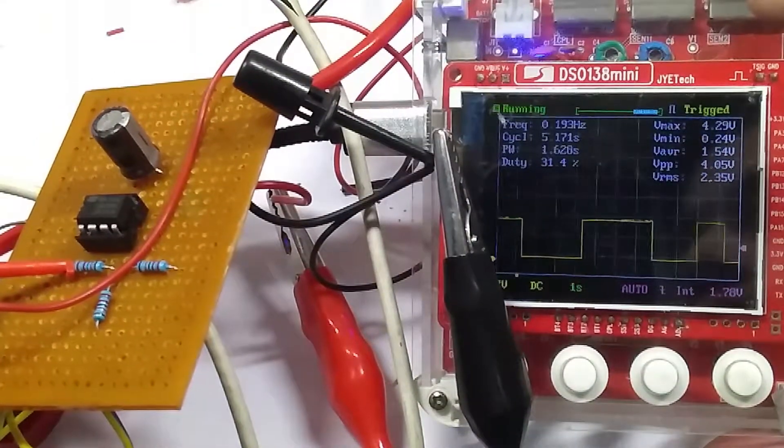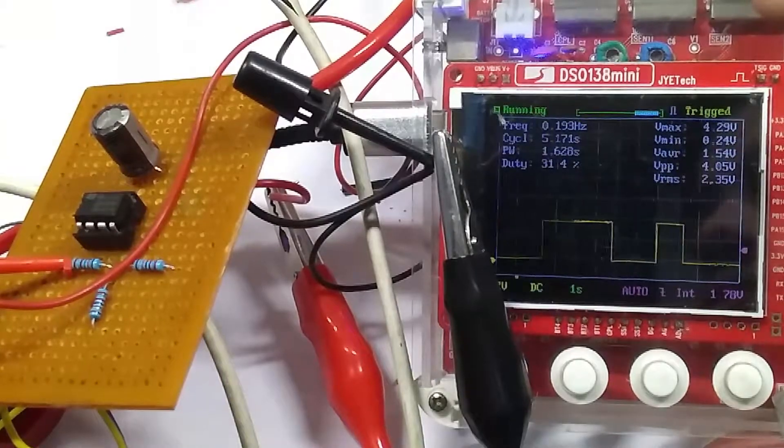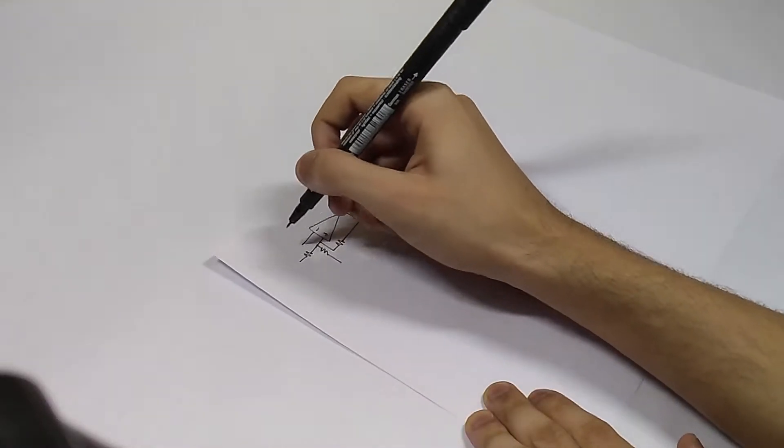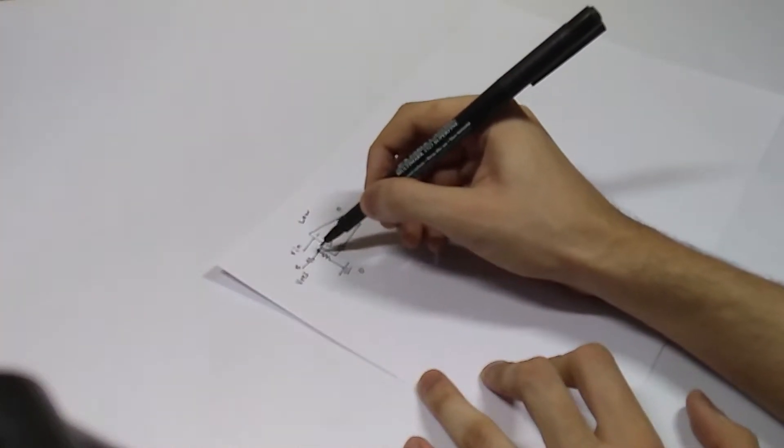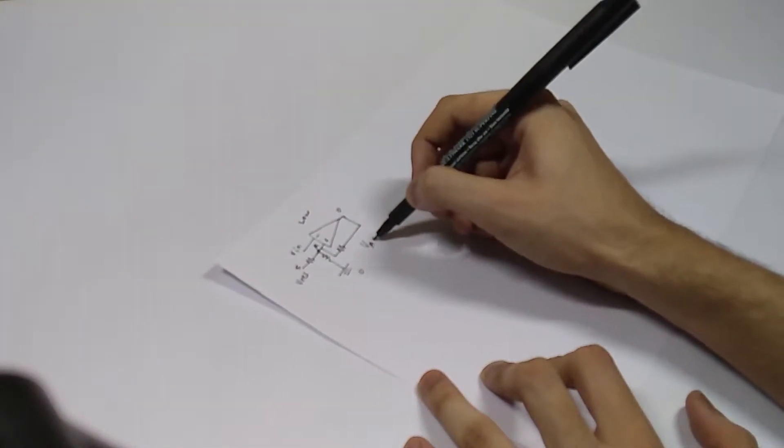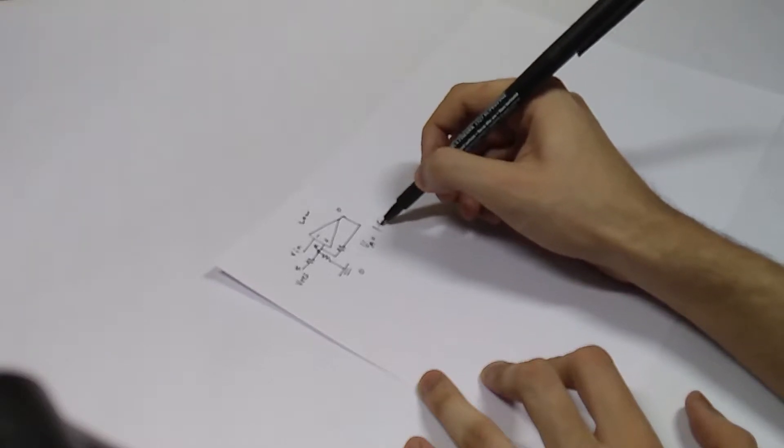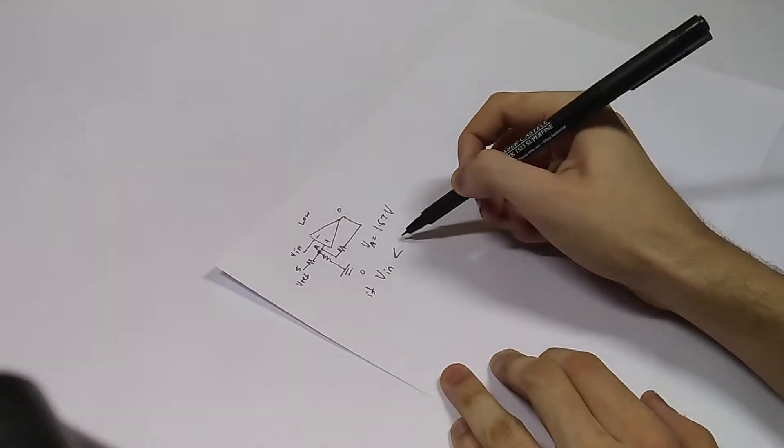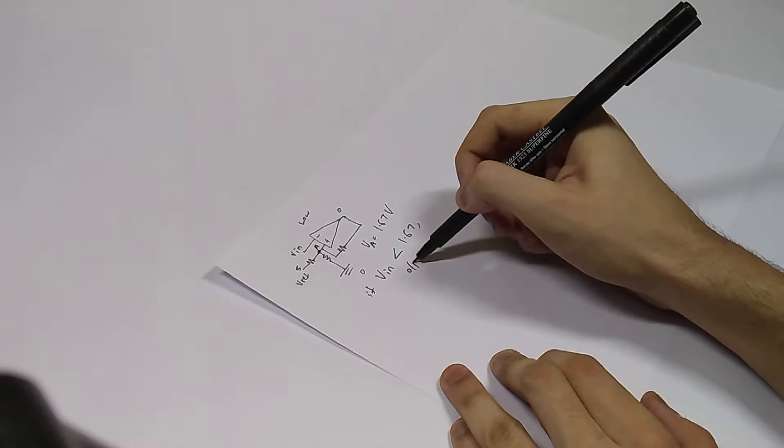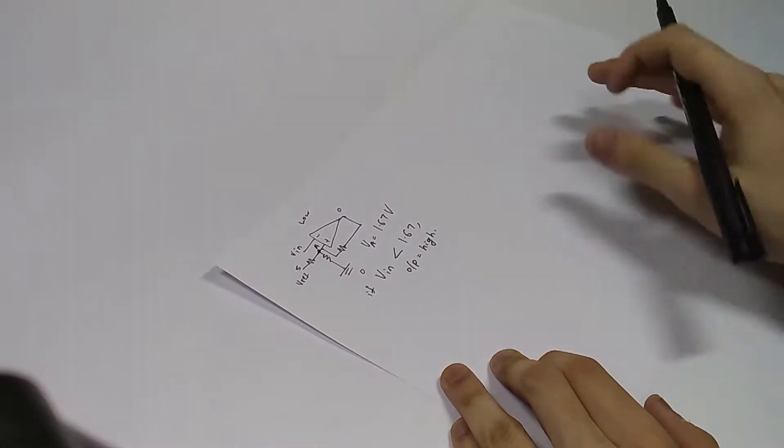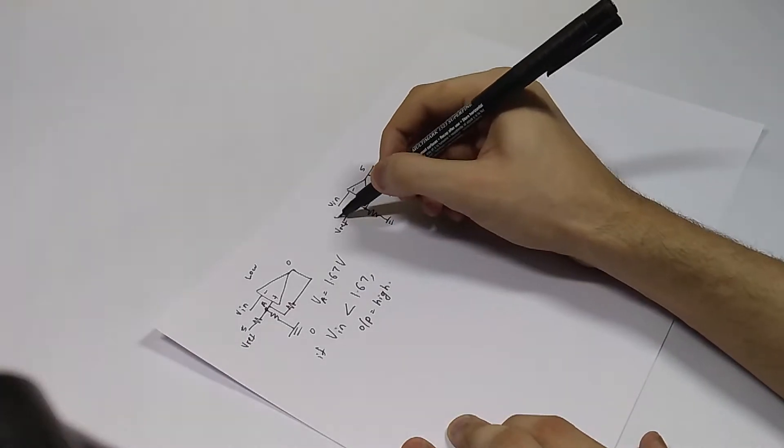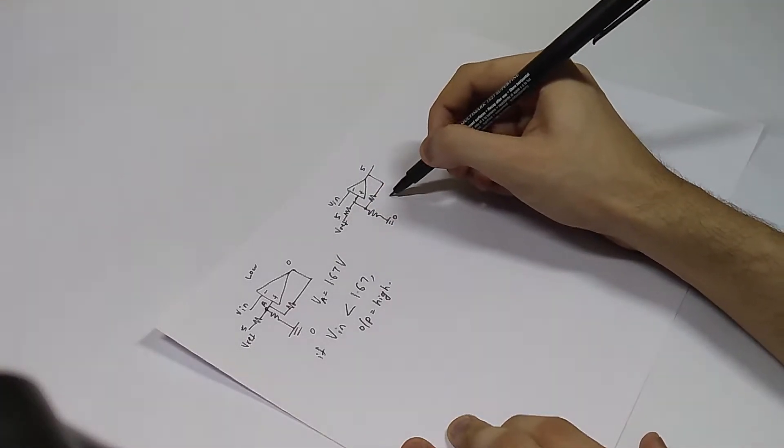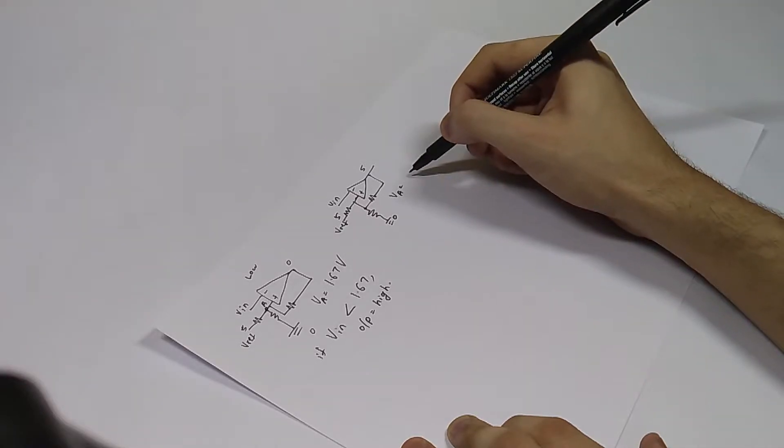This mainly revolves around a Schmitt trigger IC. A basic Schmitt trigger IC shown in this configuration with all equal resistors would trigger high if the voltage on the inverting input goes less than one-third of the supply voltage, which in this case is 1.67 volts. Once the Schmitt trigger pulls up to 5 volts, the reference voltage at the non-inverting input would change to two-thirds of 5, which is 3.33 volts.